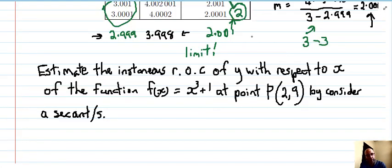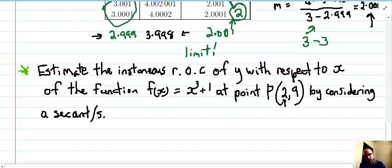So let's try to estimate the instantaneous rate of change. Here's an example of y with respect to x for the function f(x) equals x cubed plus one at point (2,9) by considering a secant or secants. We got the point x is 2 and we need to find something nearby. So let's consider then something nearby. We need a second point for a secant. So in our solution consider x equals 2.01, that's close.